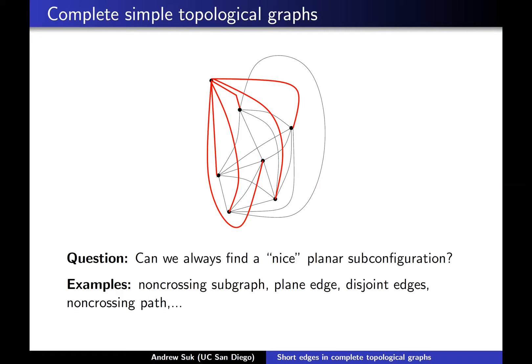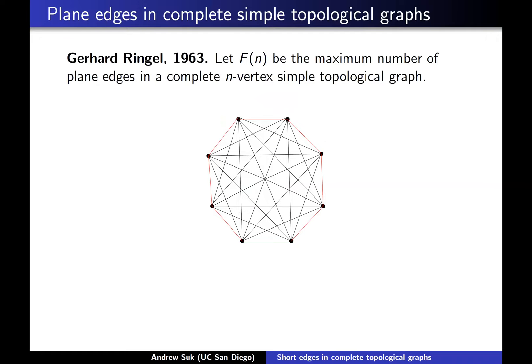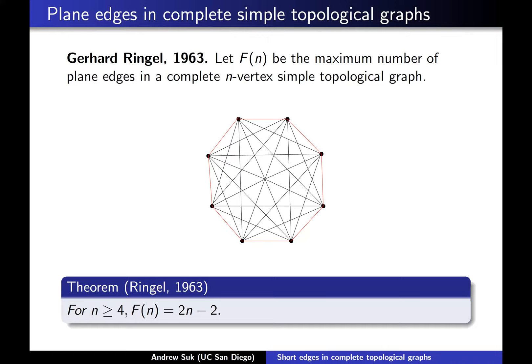The earliest paper I could find about plane edges and simple topological graphs was this paper by Ringel from 1963, who was actually interested in the dual version of what I asked. He was interested in finding drawings with the most plane edges as possible. He defined capital F(n) to be the maximum number of plane edges in the complete n-vertex simple topological graph. And what he showed in his 1963 paper is that F(n) = 2n − 2.